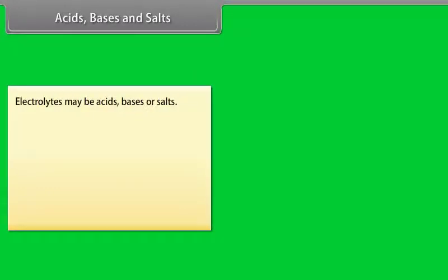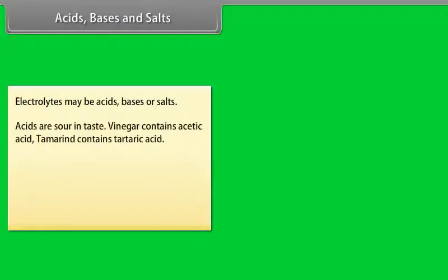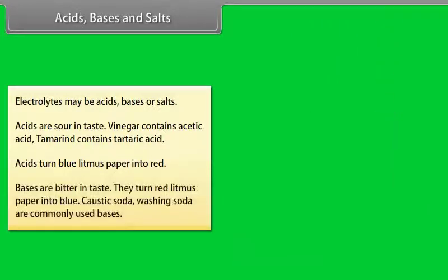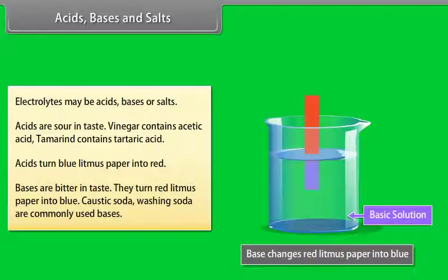Electrolytes may be acids, bases, or salts. Acids are sour in taste — vinegar contains acetic acid, tamarind contains tartaric acid. Acids turn blue litmus paper into red. Bases are bitter in taste; they turn red litmus paper into blue. Caustic soda and washing soda are commonly used bases.